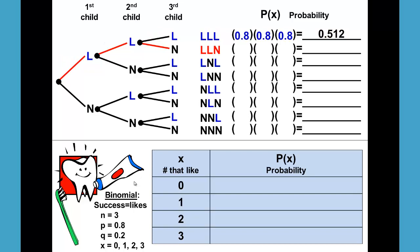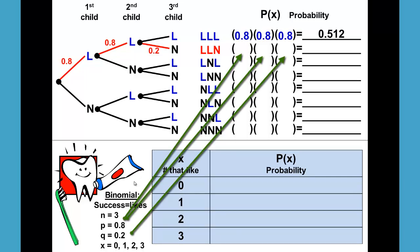For the next one down we have two likes followed by a not like, so that would be 0.8 times 0.8 times 0.2 and gives us 0.128.